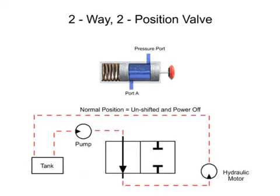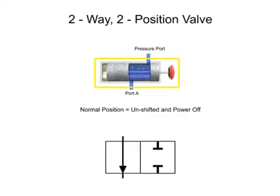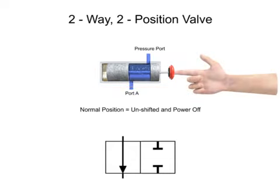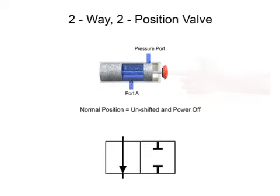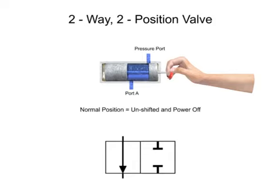On a hydraulic schematic, the lines that indicate the normal position will be connected to other devices in the system. Valves that do not have mechanical or electrical actuators do not have a normal position because they must be manually moved. When shifted, they remain in that state until manually shifted to another position.